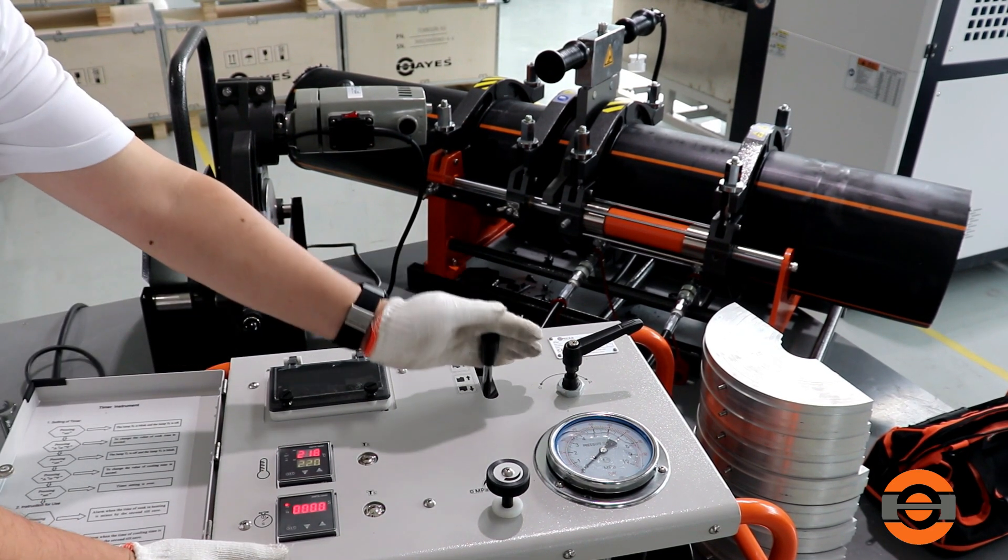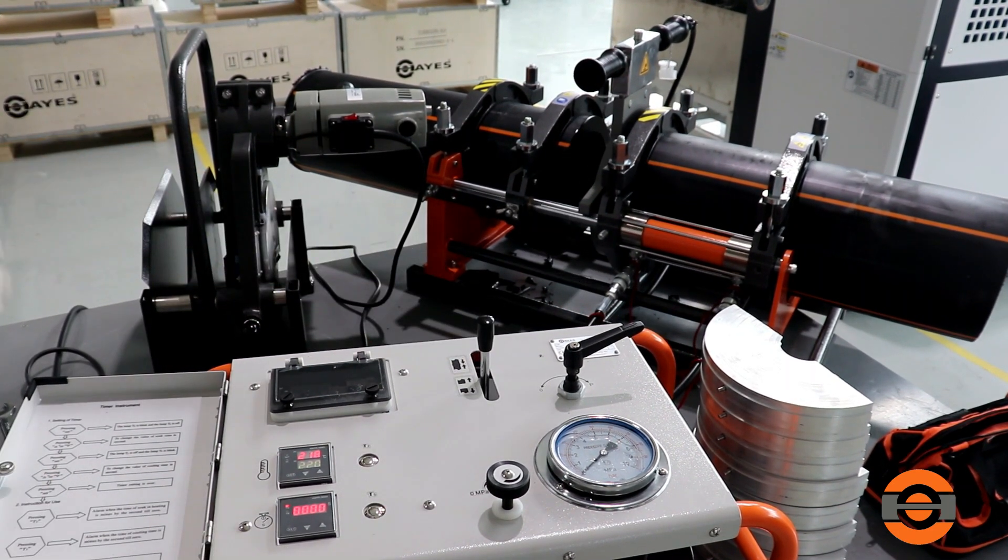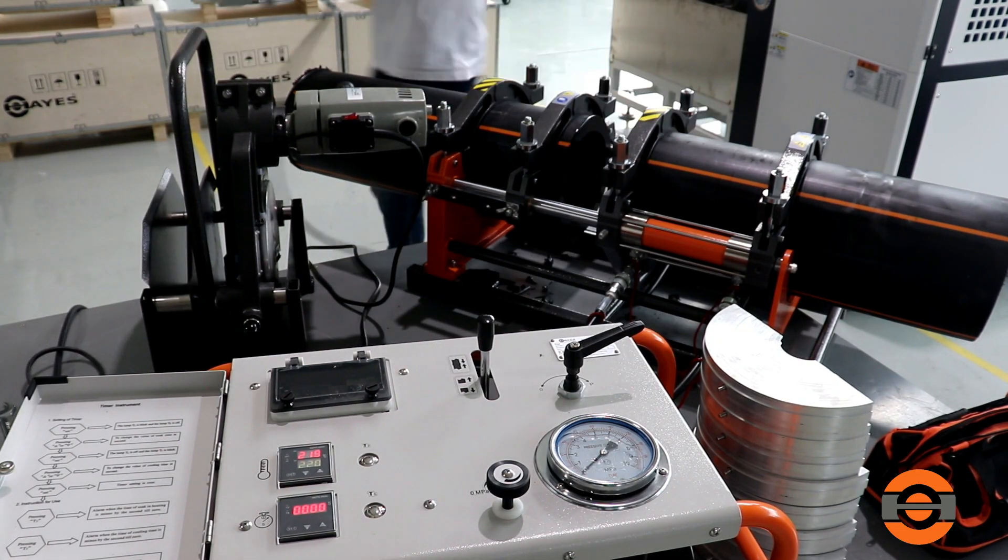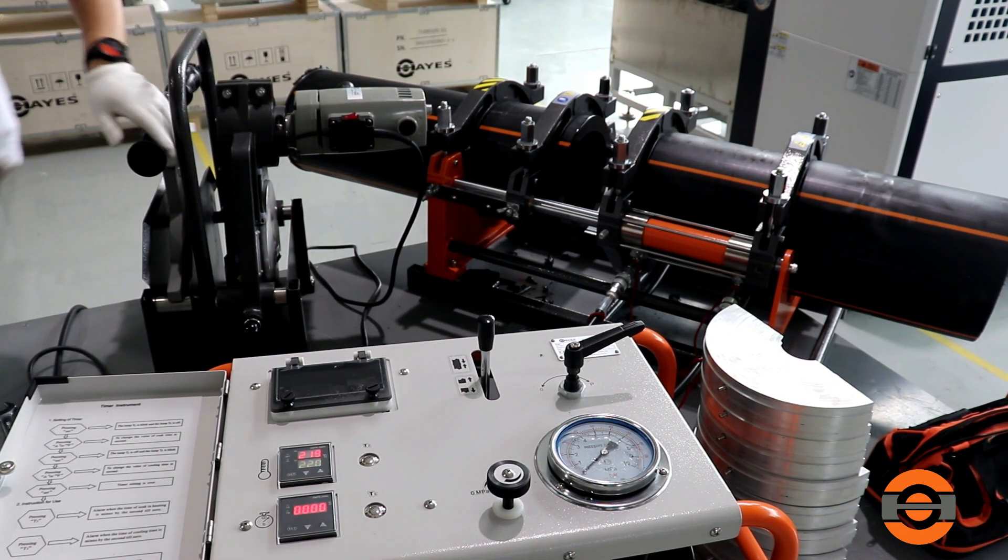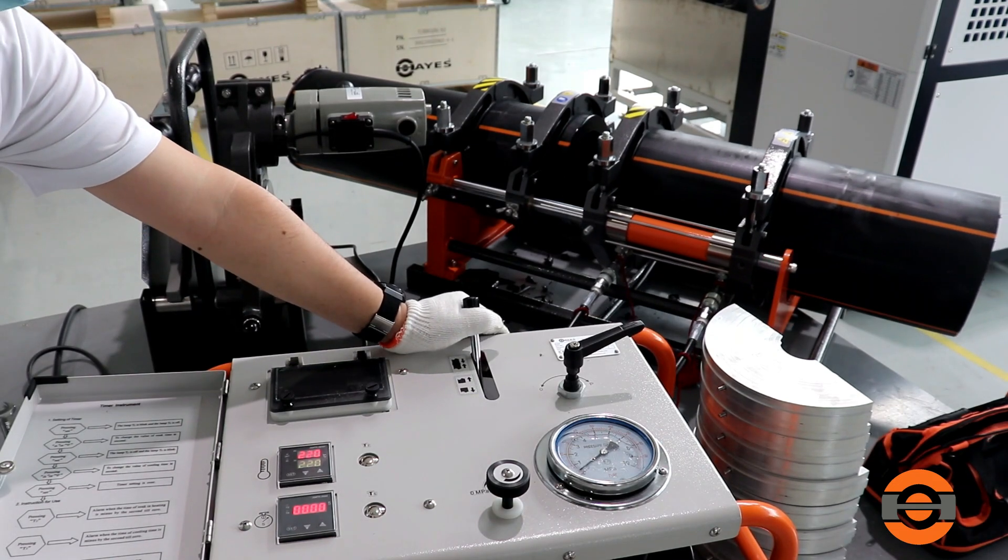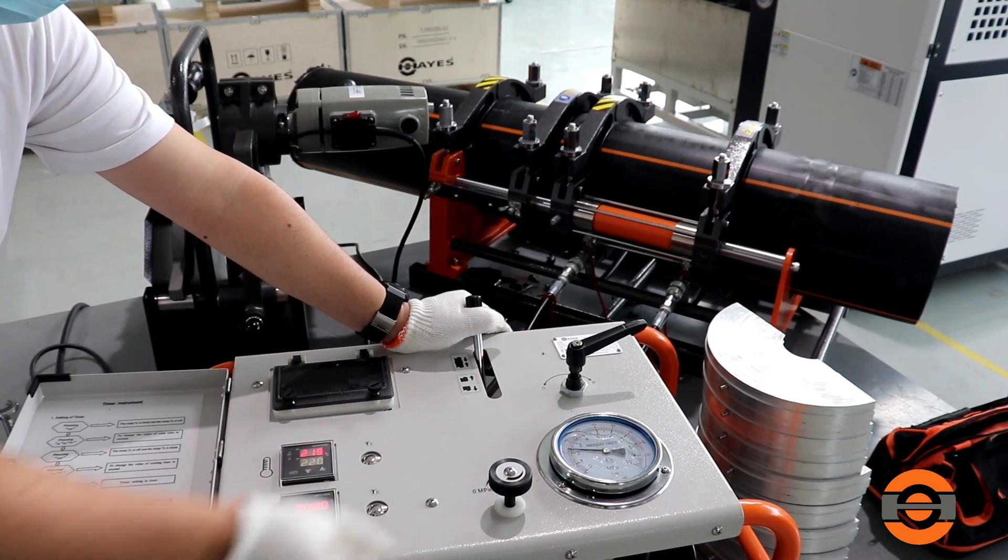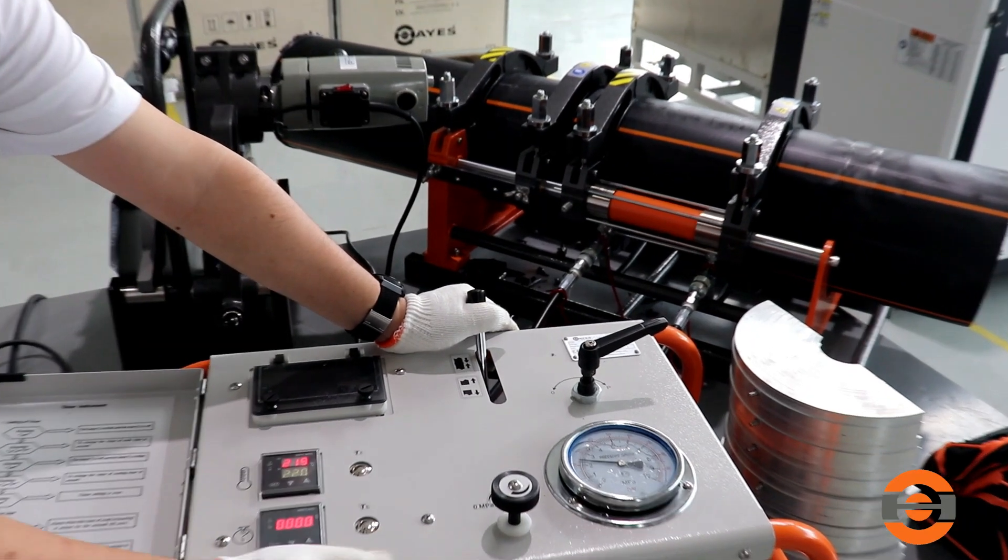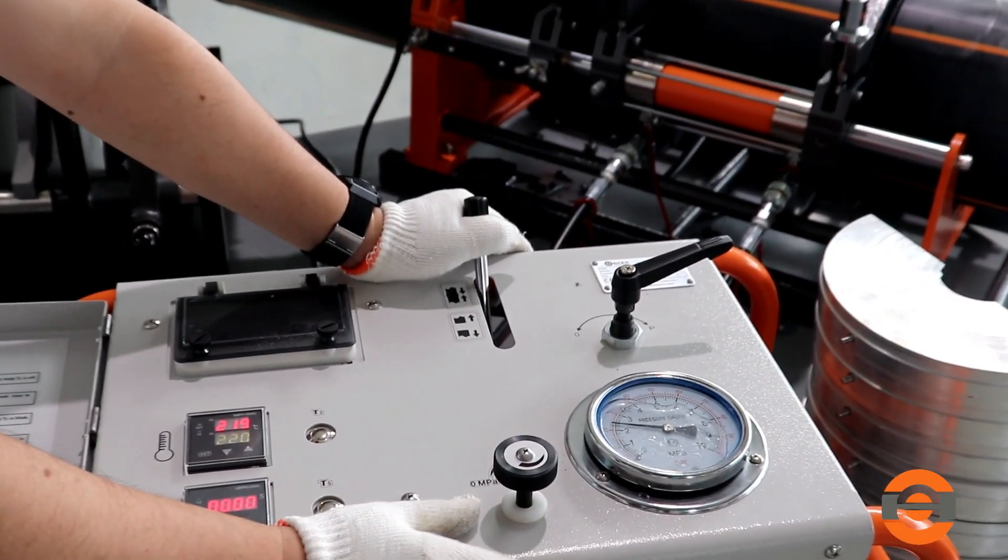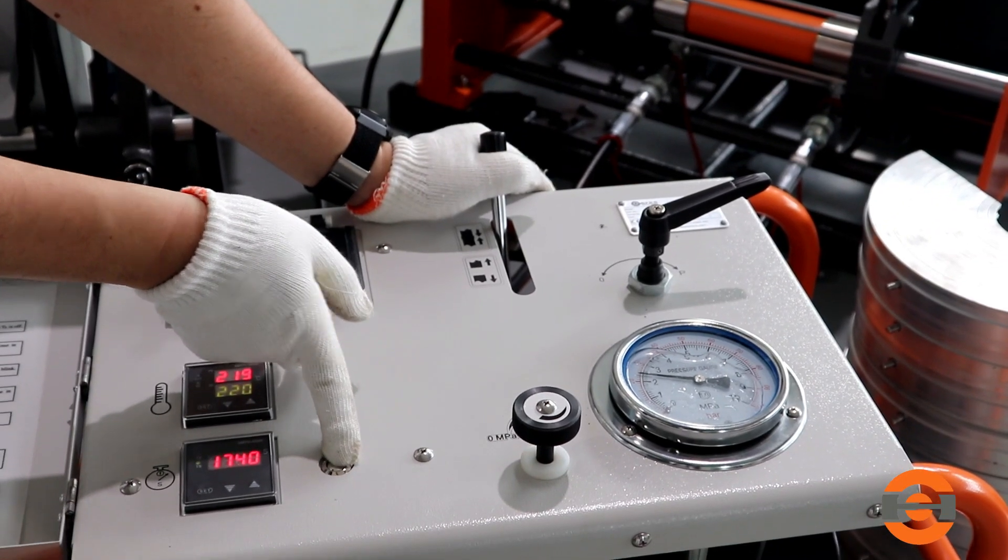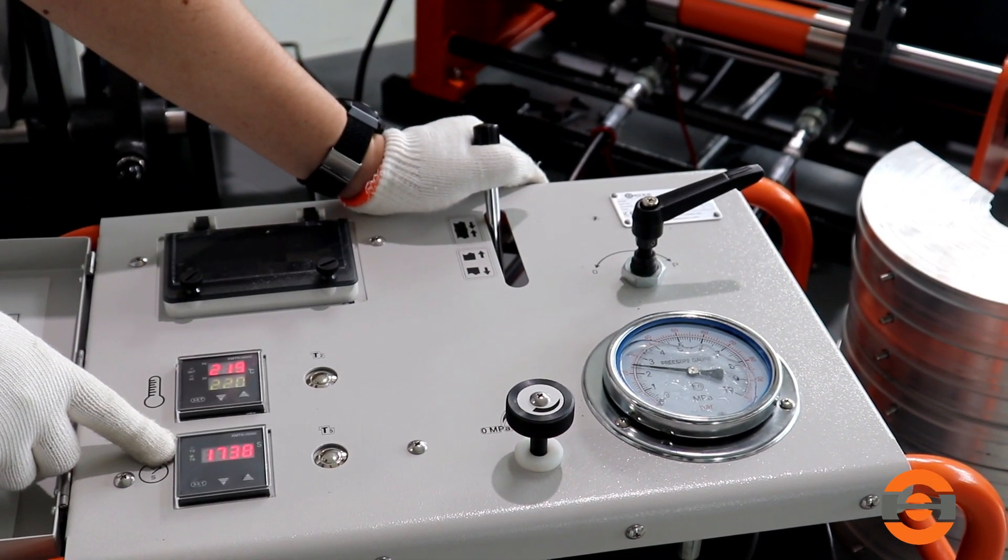When the timer goes off and the proper melt bead size is formed, quickly separate the pipe ends and remove the heating tool. This process should be completed within the recommended time. Close the clamps by bringing the pipe ends together. Raise the pressure gradually and steadily using the set time until welding pressure is reached. Do not use excessive or insufficient force.